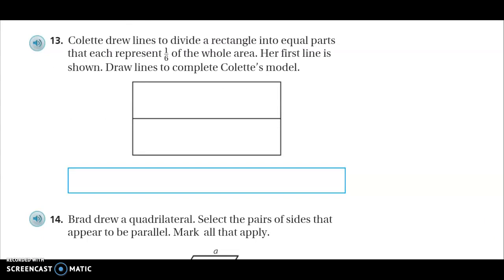Number 13. Colette drew lines to divide a rectangle into equal parts. And the equal parts that each represent one-sixth of the whole area. Her first line is shown. So you've got to draw the lines. And I need to make sure that it shows one-sixth. Because right now this does not show one-sixth. Take that shape and make it into one-sixth using the one line.